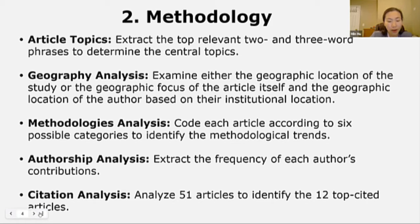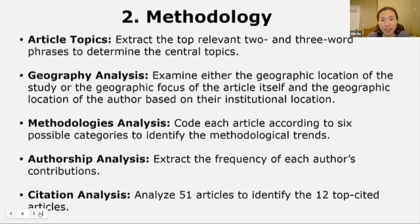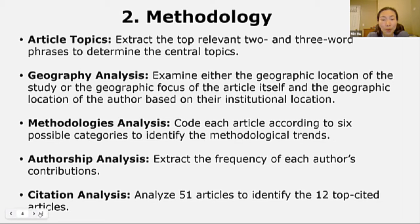For the article types and methodologies analysis, we coded each article according to six possible categories to identify the methodological trends: descriptive, inferential, interpretive, theoretical, content analysis, and combined methods. We assigned each article to a single category, and those articles with elements of more than one category were assigned according to their primary characteristics.